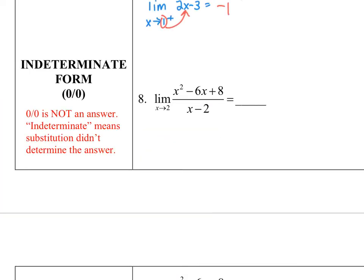On question number 8, when I try my direct substitution, I get 4 minus 12 plus 8 over 2 minus 2. And I get 0 over 0. This is called indeterminate form, and it's something that's going to show up for us. Indeterminate form, that 0 over 0. And it becomes a problem in which we need to solve. So keep in mind, 0 over 0 is not an answer. It means exactly what it sounds like. It does not determine the answer. So we have to find different methods to solve questions like this.